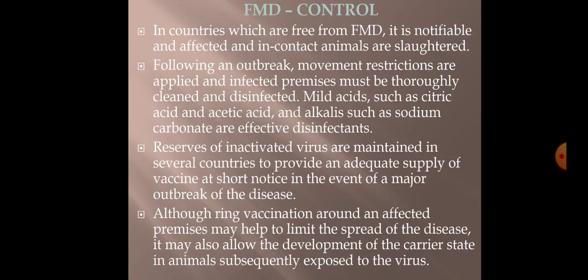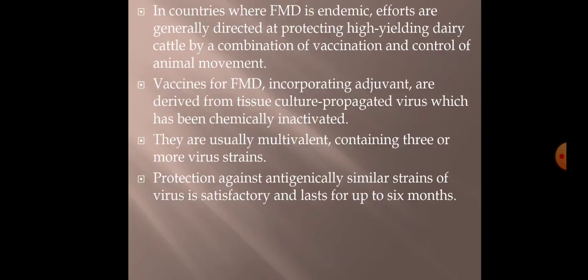Reserves of inactivated virus are maintained in several countries to provide an adequate supply of vaccine at short notice in the event of a major outbreak. Ring vaccination around an infected premises may help limit the spread of disease, but may also allow development of a carrier state in animals subsequently exposed to the virus. Following an outbreak: movement restrictions are imposed, premises should be disinfected using mild acids and alkalis, and inactivated virus vaccines should be maintained in adequate supply.